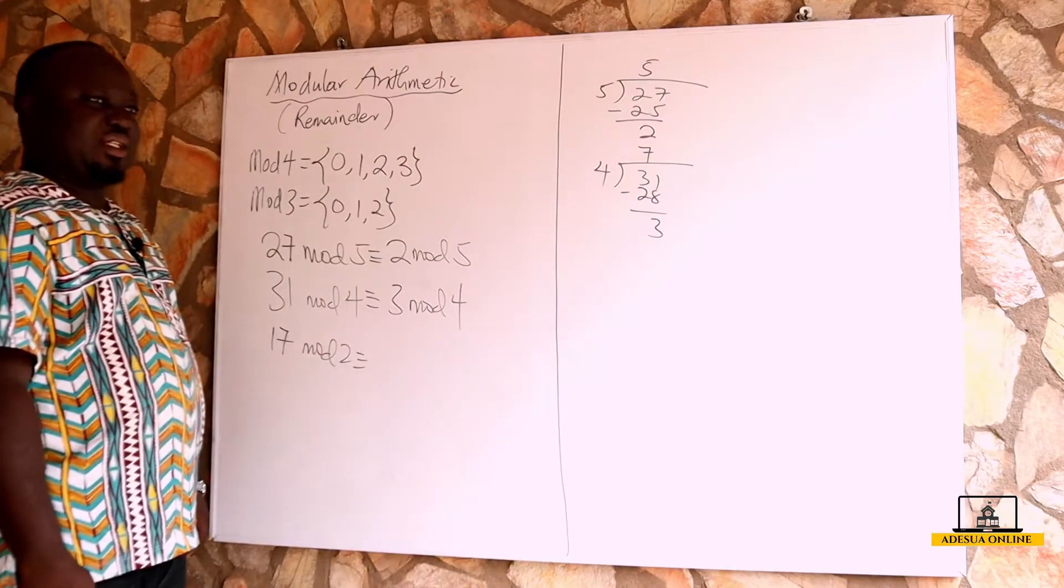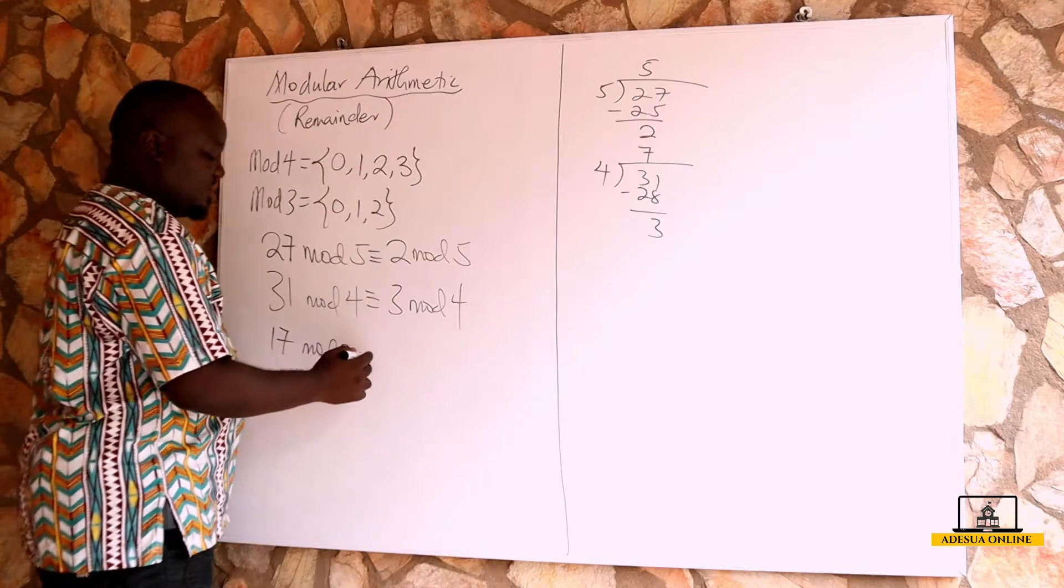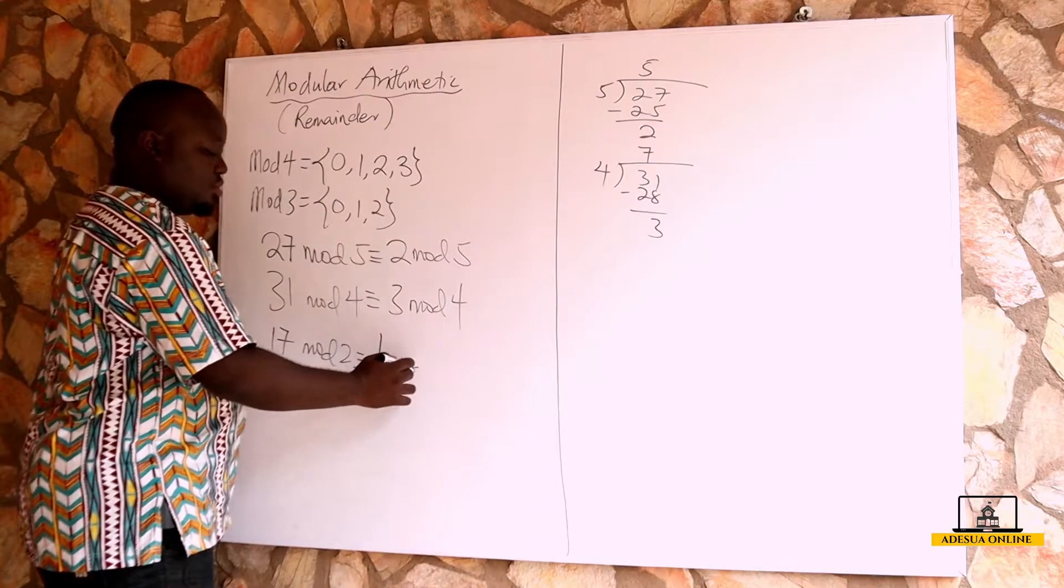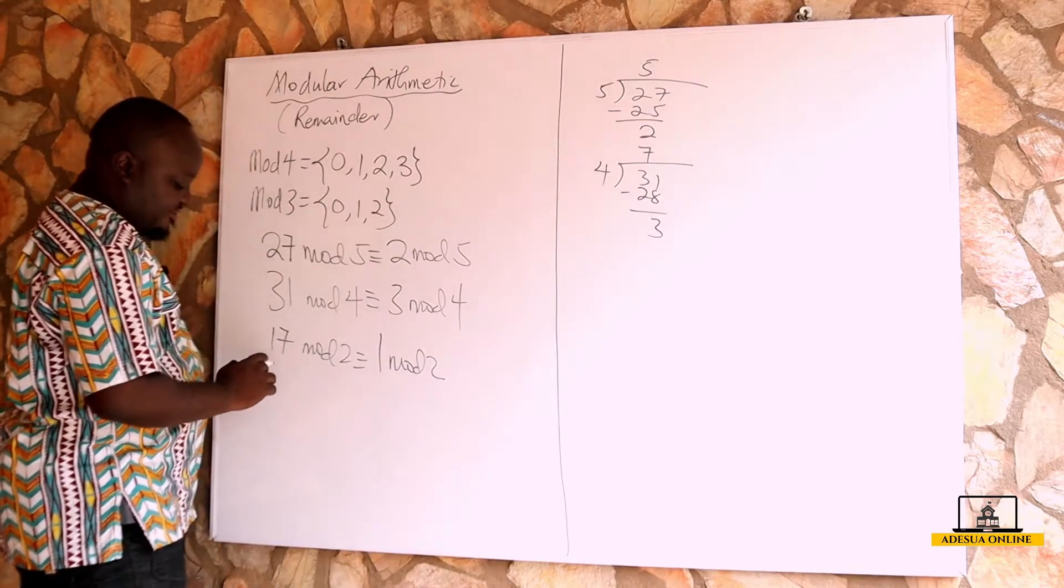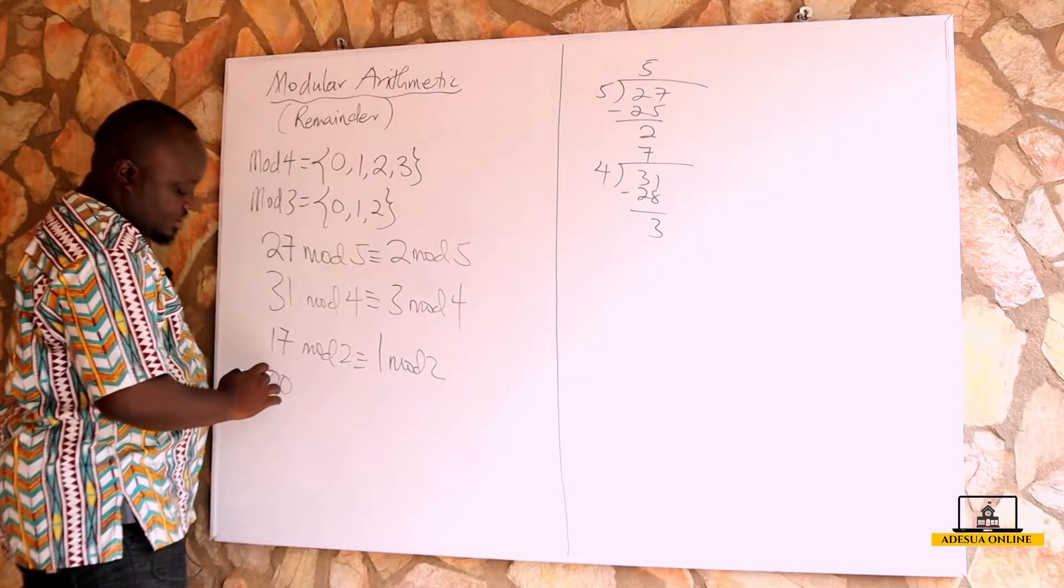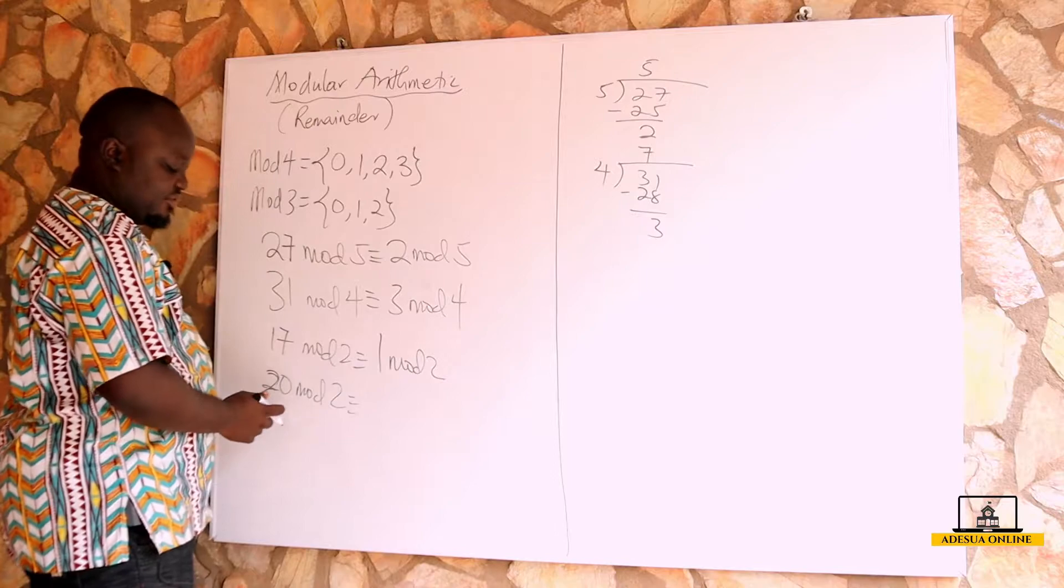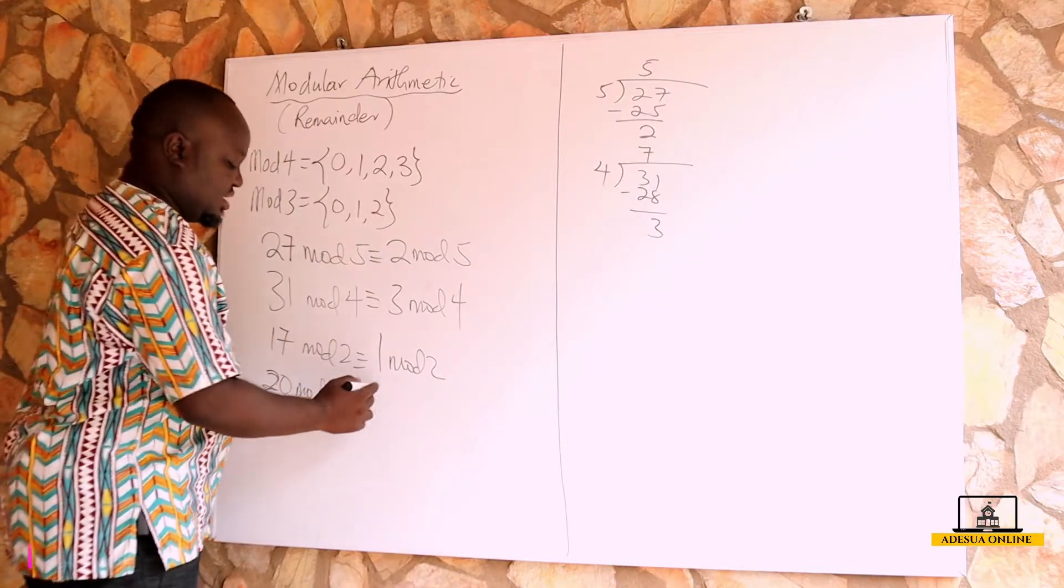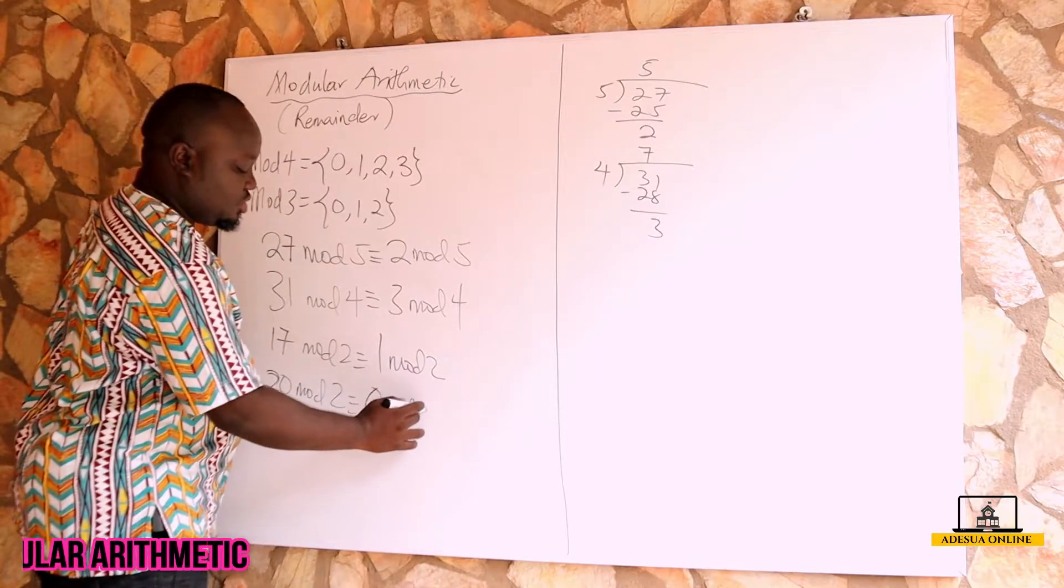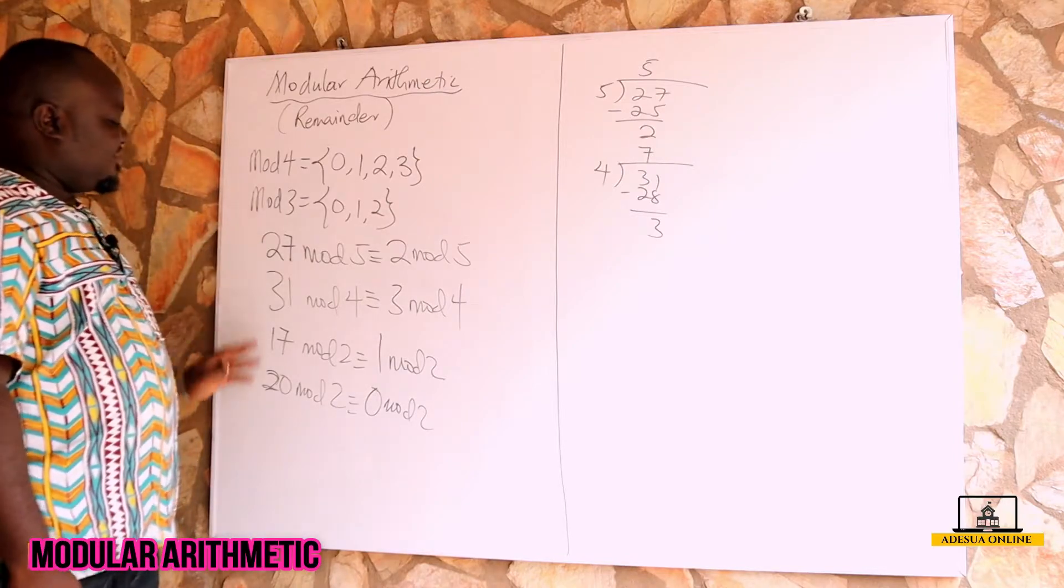17 mod 2: if we should divide 17 by 2, 2 times 8 is 16, remainder 1. So this will give us 1 mod 2. And then if we have, let's say, 20 mod 2, this will give us a remainder of 0, so this is 0 mod 2.